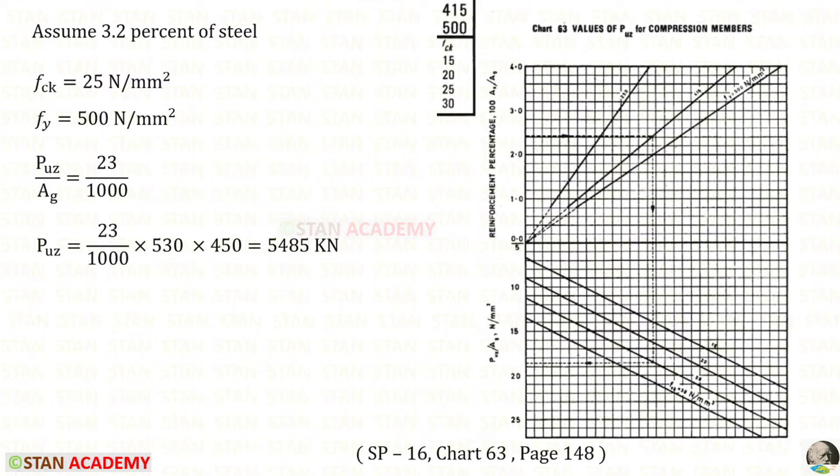Let us assume that the percent of steel is 3.2. We have to open this one, SP16, page number 148. There, we can see the chart number 63. Here, we have the percentage. This point is 3. This point is 3.2. At 3.2, we have to make a horizontal line. There are three inclined lines. We have to check which line represents our FY, 500. This is the line representing FY, 500.